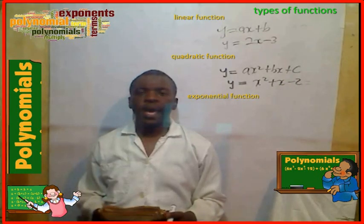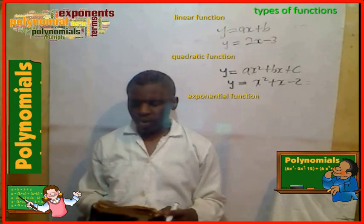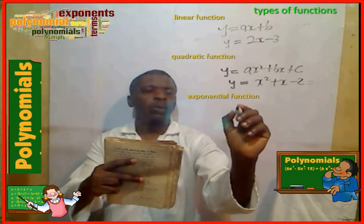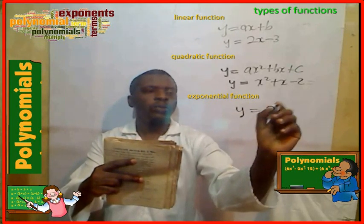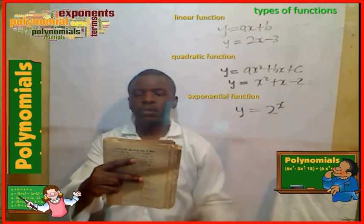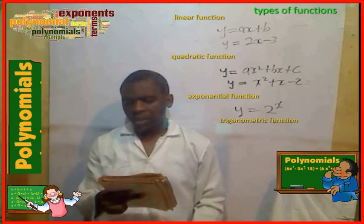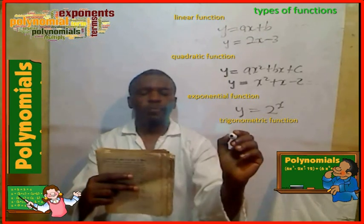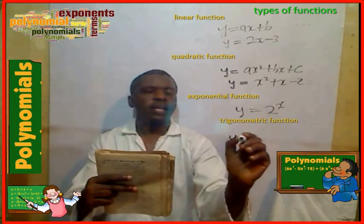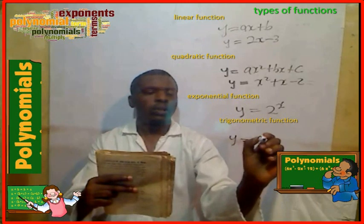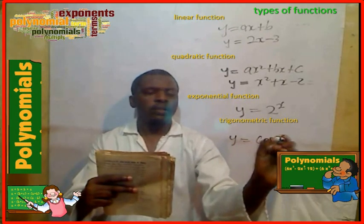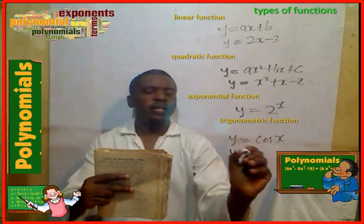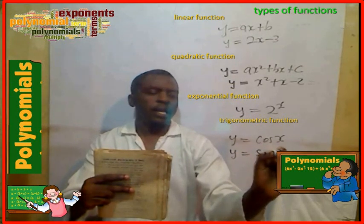Three: exponential functions. Example: y = 2 to the power x. Fourth type of function: trigonometric functions. Examples: y = cos x and y = sin x.